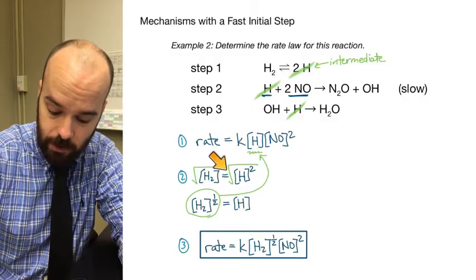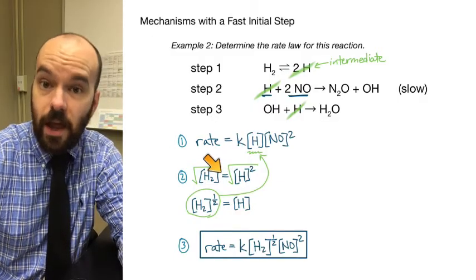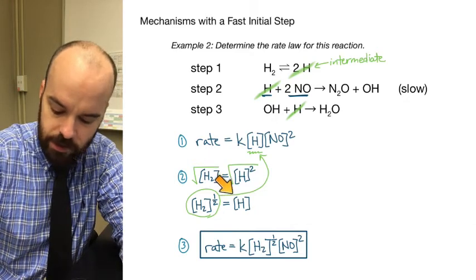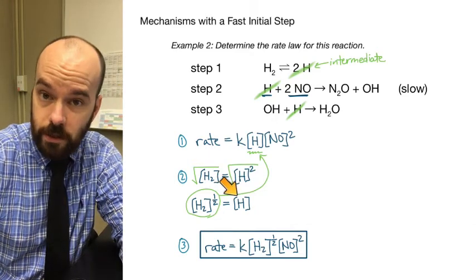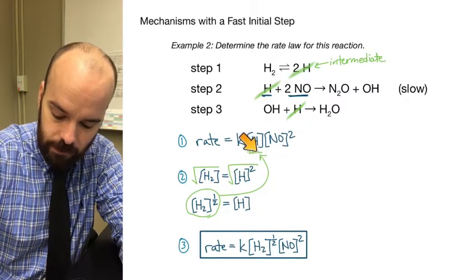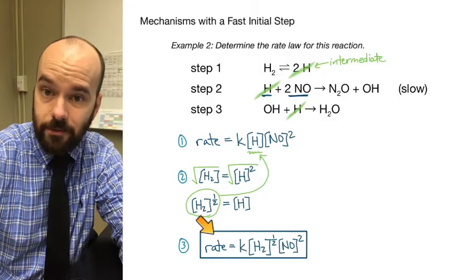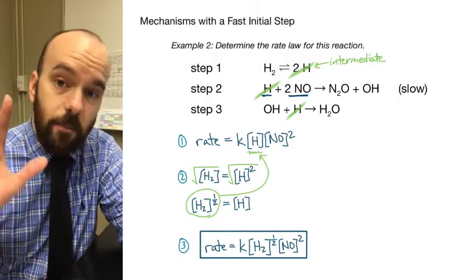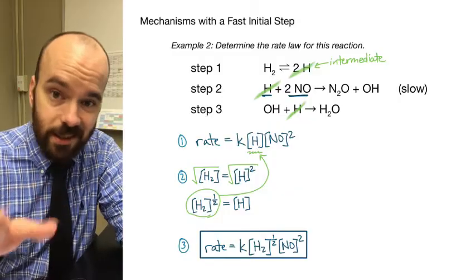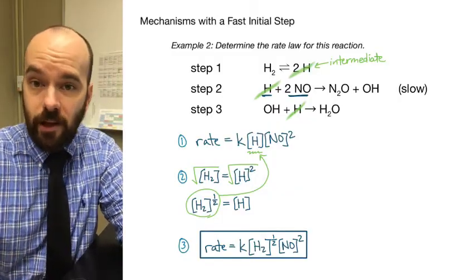To recap: we wrote the rate law based on the slow step, then took the fast initial step and wrote a mathematical equation using coefficients as exponents, then solved for the intermediate and substituted it in to rewrite the rate law. That's how we take a mechanism with a fast initial step and write a rate law with no intermediates. Hope this was helpful — thanks for watching.